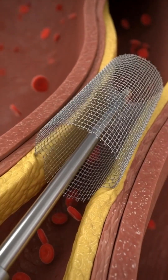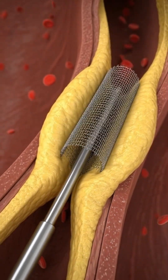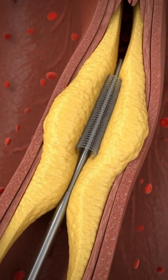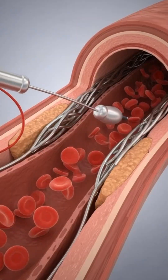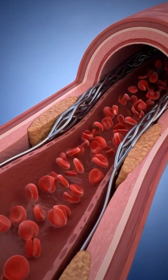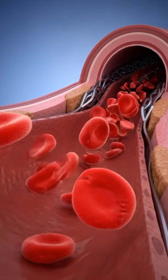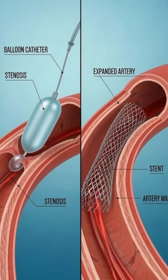When the balloon inflates, the stent expands and presses the plaque outward. The balloon is removed, but the stent stays permanently to keep the artery open.